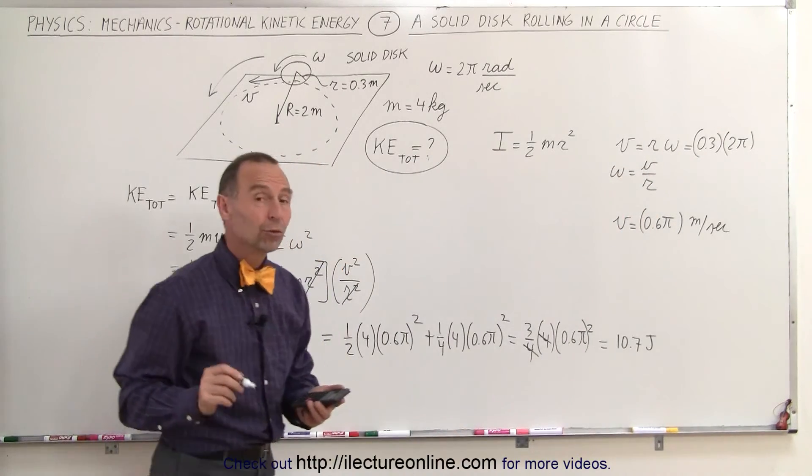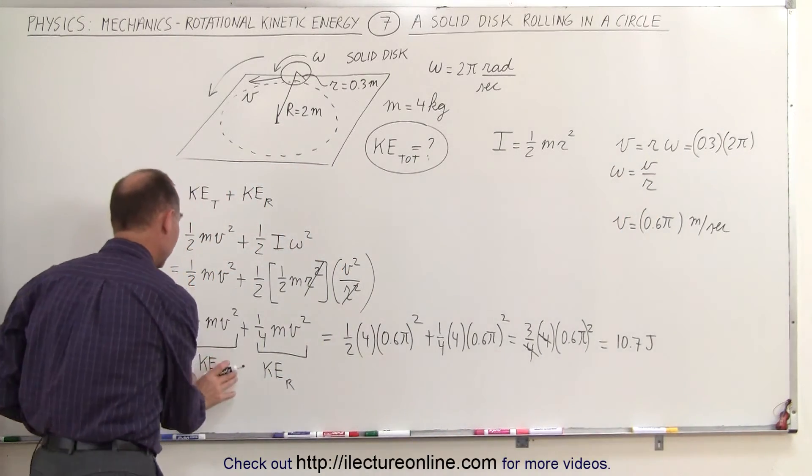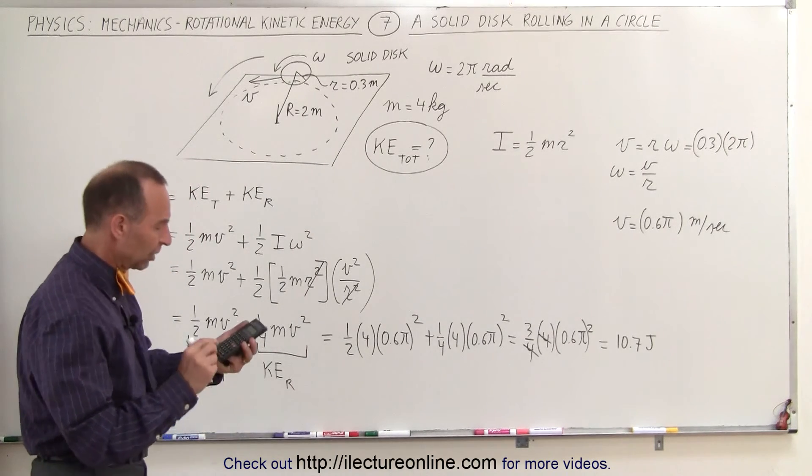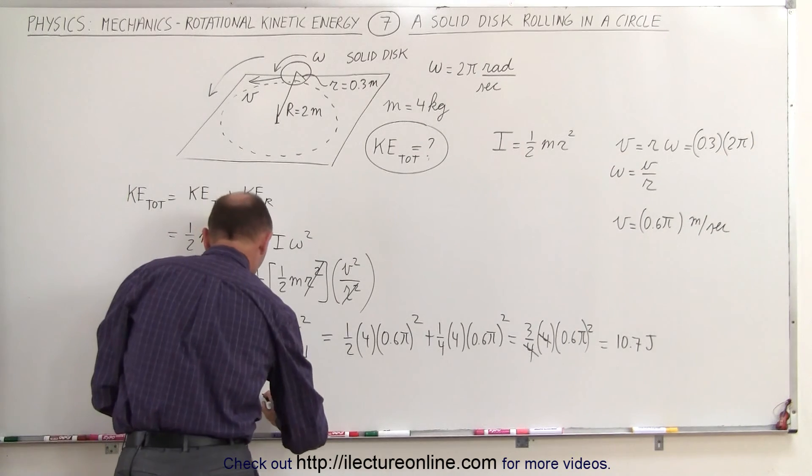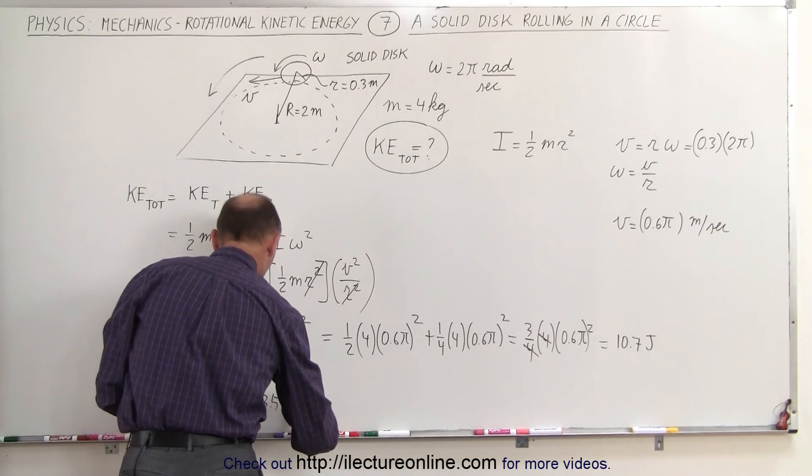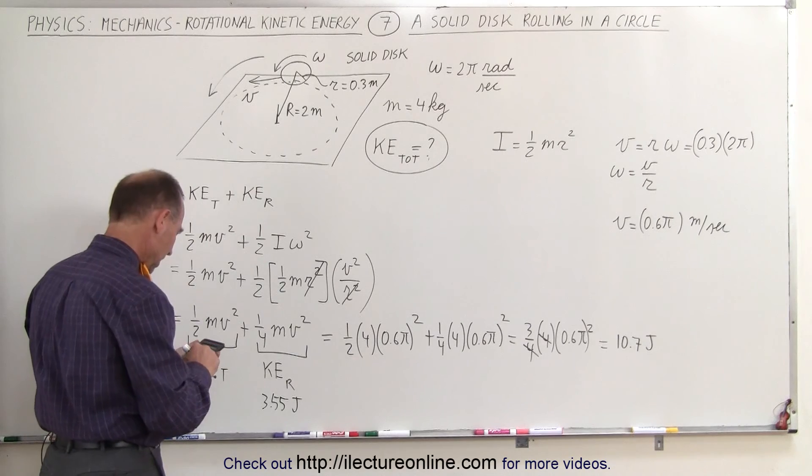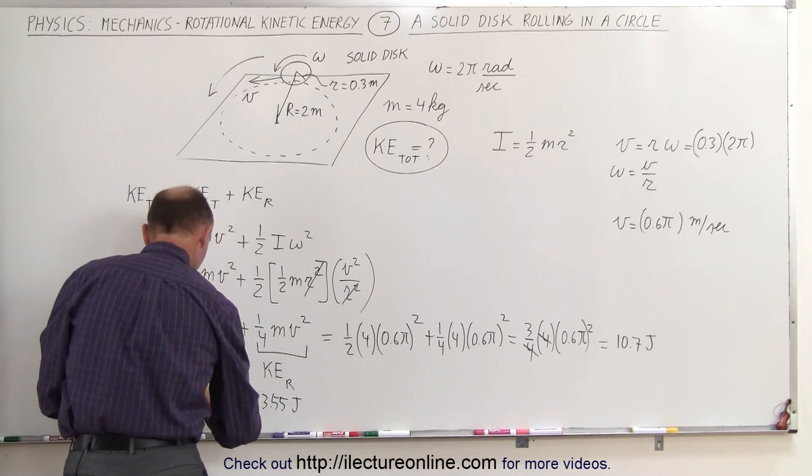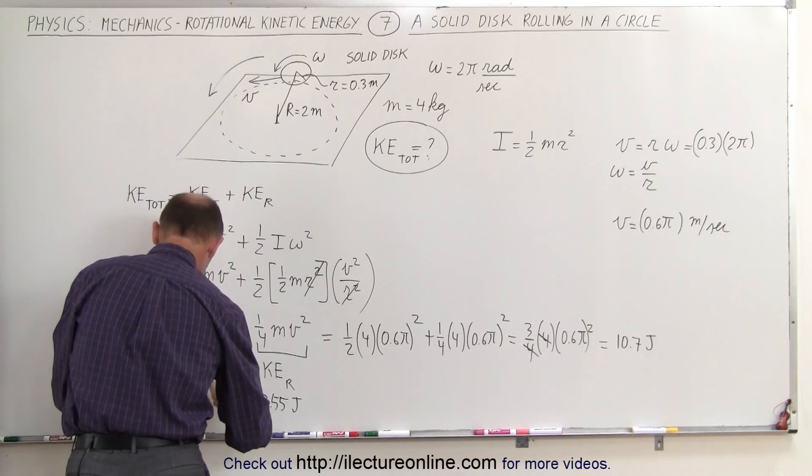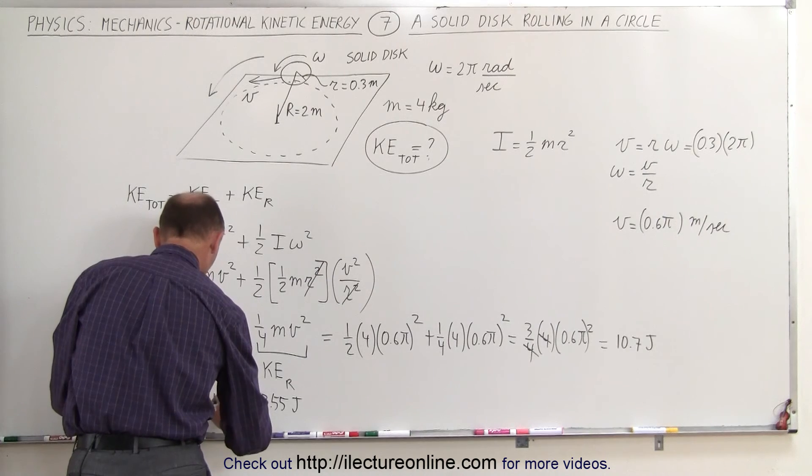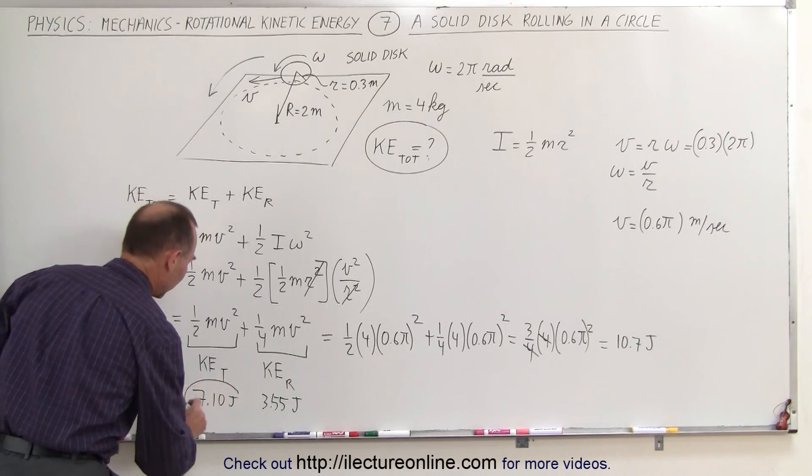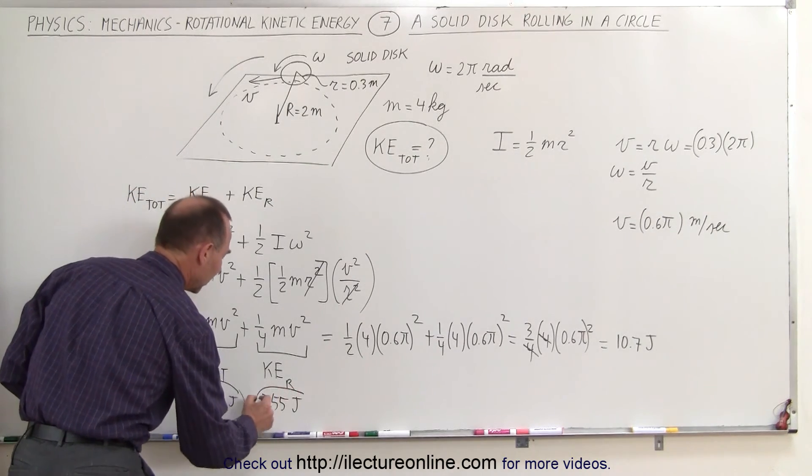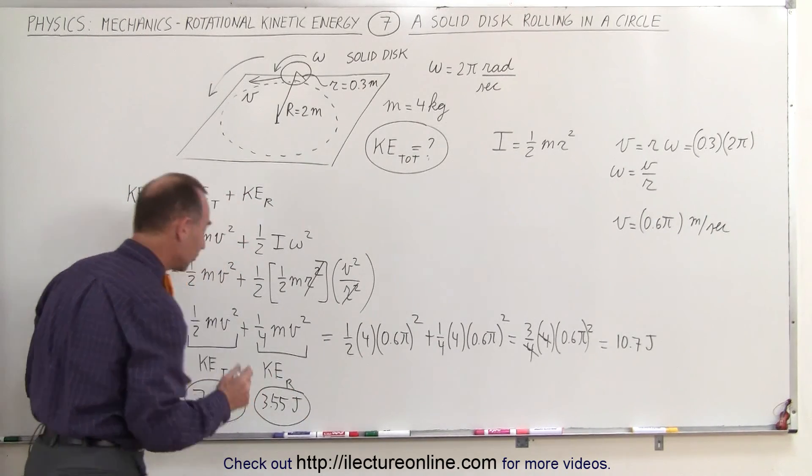Now, two-thirds of that would be translational kinetic energy, and one-third of that will be rotational kinetic energy. Divide by 3, we get 3.55 joules for the rotational energy, and times 2, we get about 10 joules of translational kinetic energy. So notice, that's how much translational kinetic energy we have. That's how much rotational kinetic energy we have together.